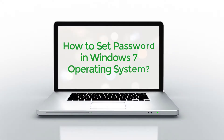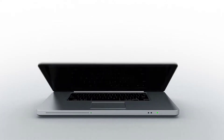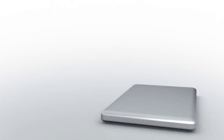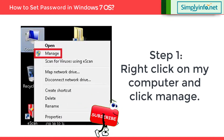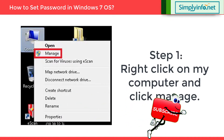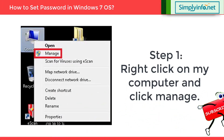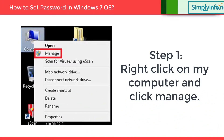How to Set Password in Windows 7 Operating System. Step 1: Right-click on the My Computer icon on the desktop and select the option Manage.